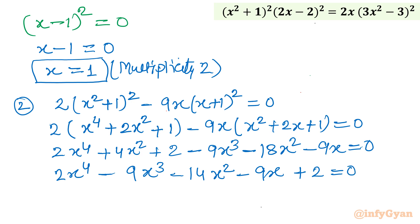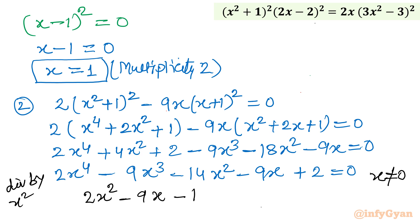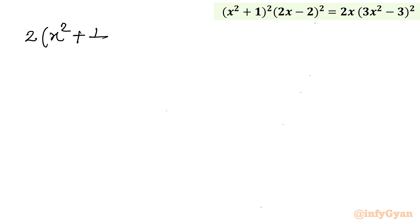You can see this is a reciprocal equation. Since x = 0 is not a solution, we divide by x². This gives: 2x² - 9x - 14 - 9/x + 2/x² = 0. Grouping the first and last terms together, and the second and second-last terms together, we write: 2(x² + 1/x²) - 9(x + 1/x) - 14 = 0.